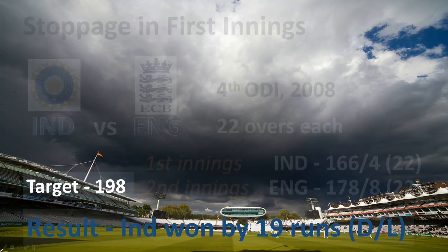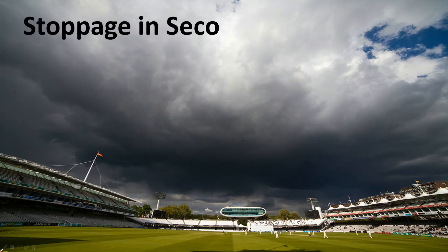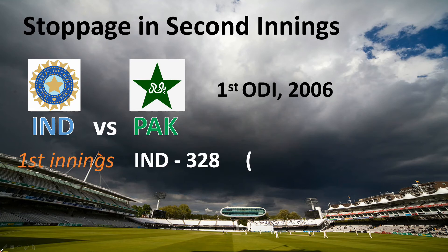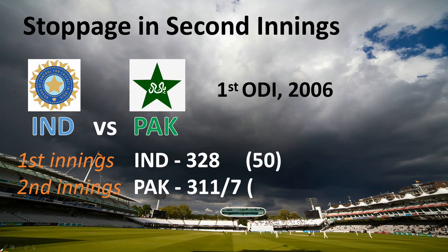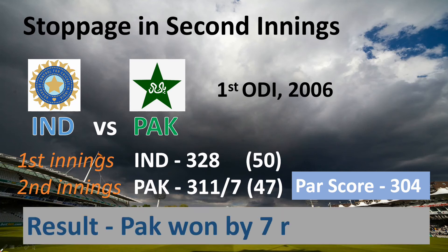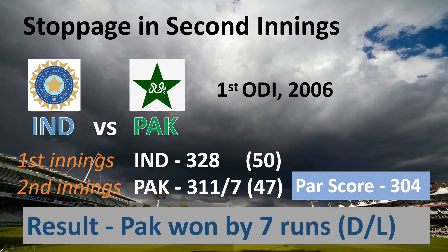In a match between India and Pakistan — the first ODI of the bilateral series in 2006 — India scored 320 all out with no interruption in the first innings. In reply, Pakistan scored 311 for the loss of 7 wickets in 47 overs when rain stopped play and the match was abandoned. The par score for Pakistan was 304, and since Pakistan had already crossed the par score, the result was Pakistan won by 7 runs via the DL method.